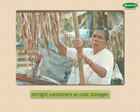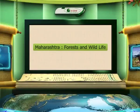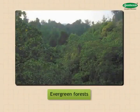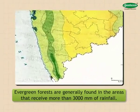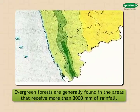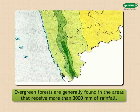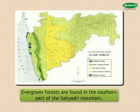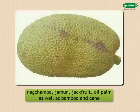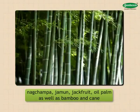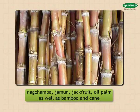Maharashtra forests and wildlife — forest wealth: evergreen forests are generally found in areas that receive more than 3000 mm of rainfall. There are different types of trees in these forests, so the forests appear green throughout the year. Evergreen forests are found in the southern part of the Sahyadri mountains. Trees like nagchampa, jamun, jackfruit, oil palm, as well as bamboo and cane are found in these forests.